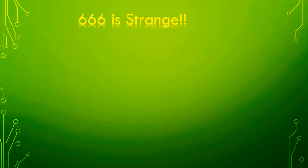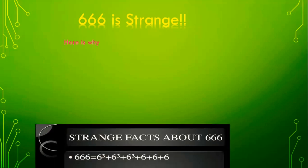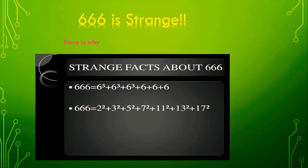Now, we will see the special properties of the number 666. Look at this number — 666. Some interesting facts are here. 666 is expressed as 6 cubed plus 6 cubed plus 6 cubed, plus 6 plus 6 plus 6. So, 666 is expressed as the sum of the cubes of its digits plus the sum of the digits. This is one of the facts.